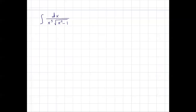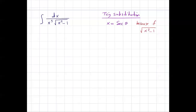In evaluating the integral of dx divided by x cubed times square root of x squared minus 1, we're going to apply the method of trig substitution. We let x equal secant of theta because of the square root of x squared minus 1. So dx is equal to secant theta tangent theta d theta. Let us start the substitution.